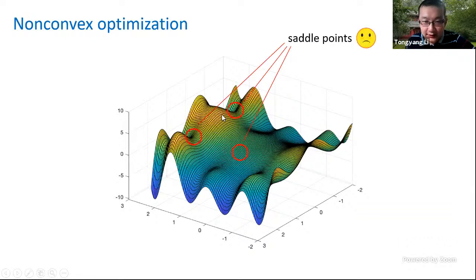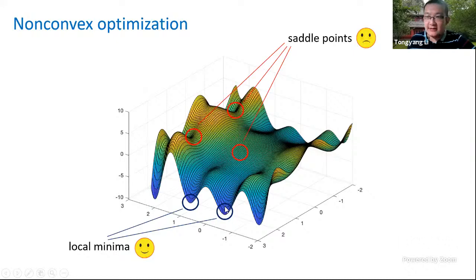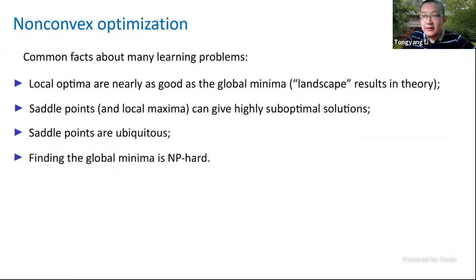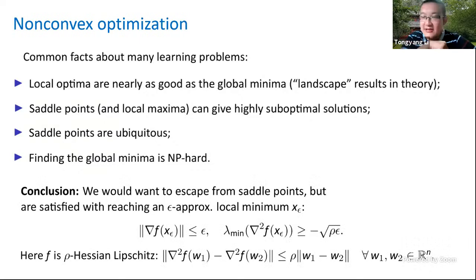The question is, is this good enough? The one main issue for non-convex optimization, especially in high dimensions, is saddle points. Looking at the landscape, if you start near a saddle point and do gradient descent, you will unfortunately be trapped there. Local minima are actually not that bad — they're nearly as good as the global minimum, supported by some landscape results. But saddle points are typically quite bad and can give highly suboptimal solutions. Unfortunately, saddle points are ubiquitous, and finding the global minimum is generally hard.